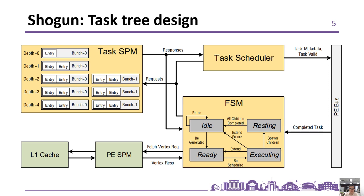We evaluate Shogun with a cycle-level simulator. With an overall area overhead of less than 4%, Shogun improves performance by 63% on average.